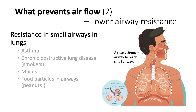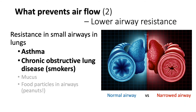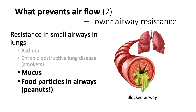After air passes the vocal cords, it has to pass through the windpipe and smaller airways before reaching the lung air sacs. In patients with asthma or chronic obstructive lung disease, the smaller airways may be narrowed or collapsed. The windpipe and the small airways may also be blocked by mucus or by inhaled food particles.